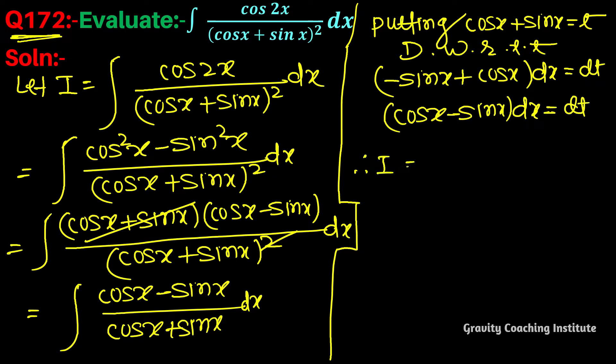Therefore I equals the integral of... if we have put cos x plus sin x as t, then this is 1 upon t, and in place of cos x minus sin x dx we put dt, which equals log t.